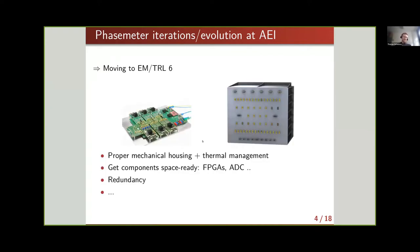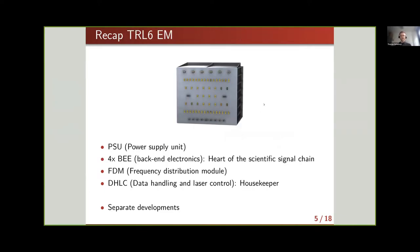This breadboard model cannot simply be put onto a spacecraft — we need to increase the TRL level and put it into proper housing. The goal is a proper housing with thermal management and very importantly with space-flight components. All the electronics need to move to components that have space-flight equivalents, in particular FPGAs and ADCs. We also have to take into account redundancy — for example, in one module we have 16 channels servicing eight quadrant photo receiver channels in cold redundancy. This leads toward what we describe as the EM, a TRL6 engineering model.